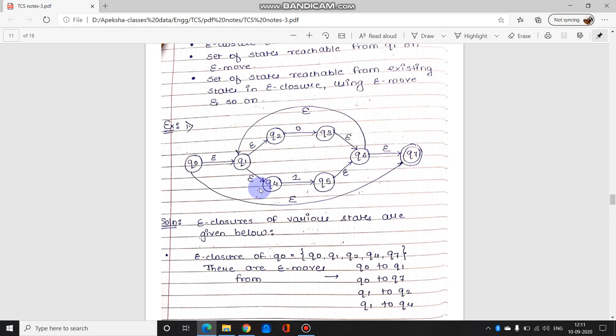So closure find karna matlab Q0 se epsilon move pe direct ho ya indirect ho, kitne epsilon moves se kya kya path ban raha hai aur us mein konse states included hai, wo states closure mein aayenge. Once you write the closure ki yeh yeh states include hai, then yeh states kaise include huay, uske path aapko likhne hai. For example, when I say e-closure of Q0 is considering all the states, then how it is possible? So there is an explanation for it over here ki yeh rahe particular epsilon moves. So starting with Q0, there is an epsilon move from Q0 to Q1, then an epsilon move from Q0 to Q7, then there is move from Q1 to Q2 and Q1 to Q4.